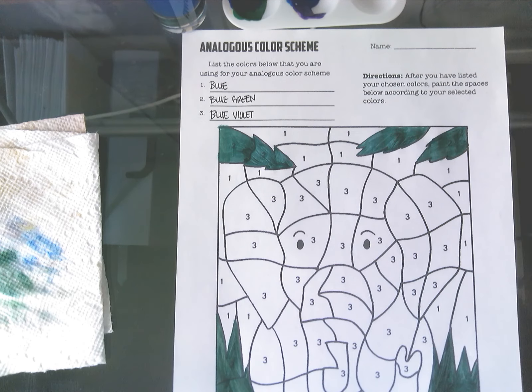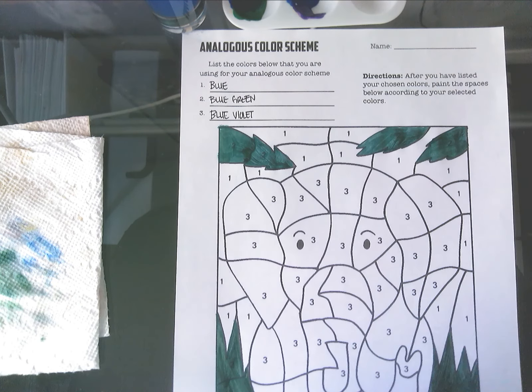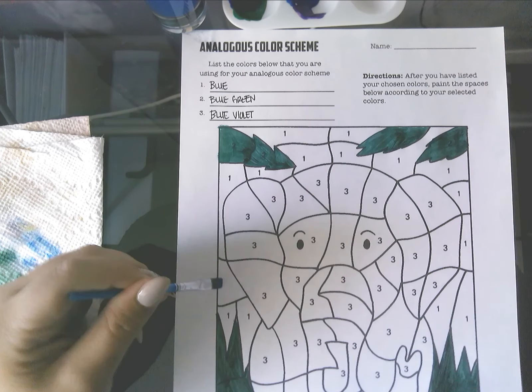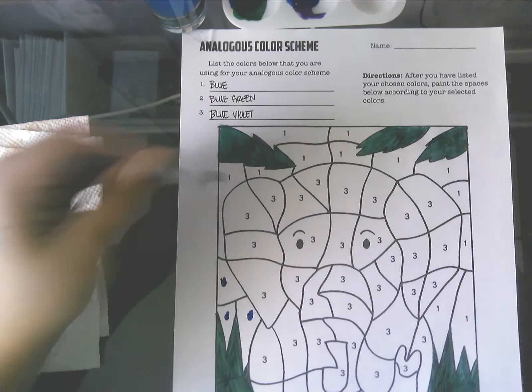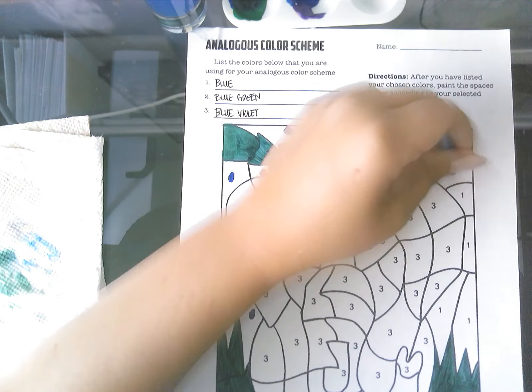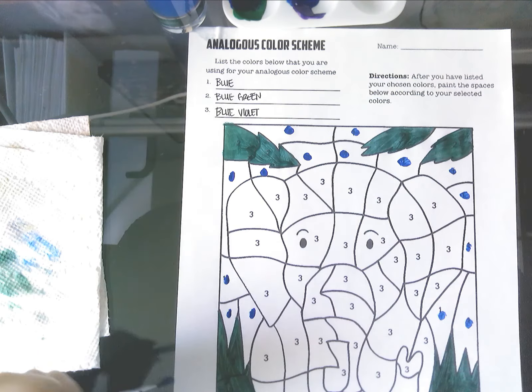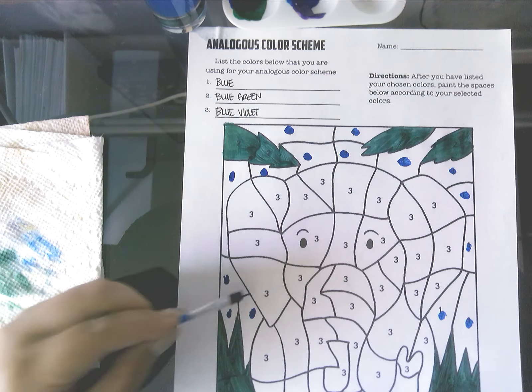And now I'm going to move on to number one, which is blue for me. So I'm just going to use that straight out of its little container. And anywhere I see a one, I'm going to make a little dot. I believe I've gotten them all. So now I'm going to paint in those places with my number one.